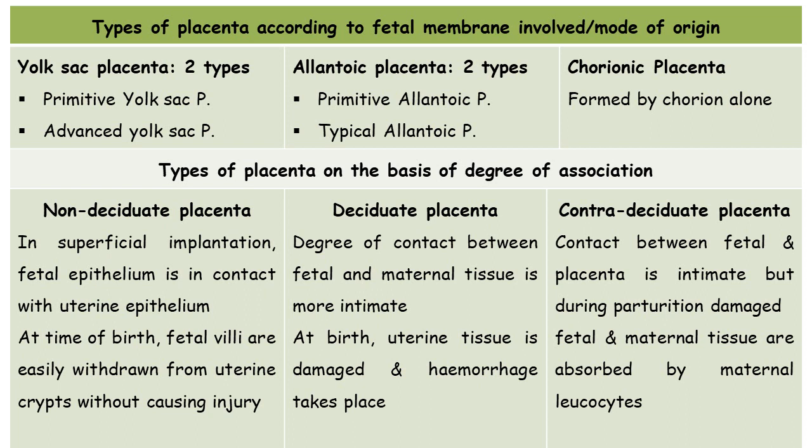The next part is the chorionic placenta. In this type, the placenta is formed by only one extra-embryonic membrane — the chorion. We have studied this type in the case of humans. The placenta is contributed by chorionic villi from the fetal side, which later form the complete structure for withdrawing nourishment from the maternal blood.